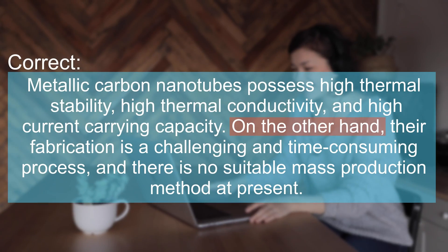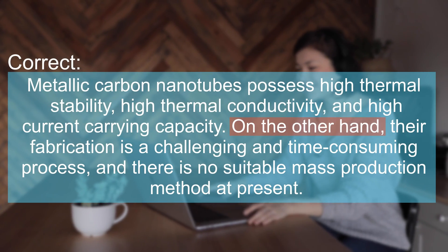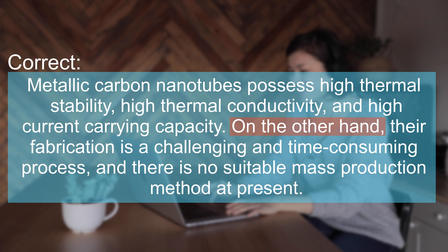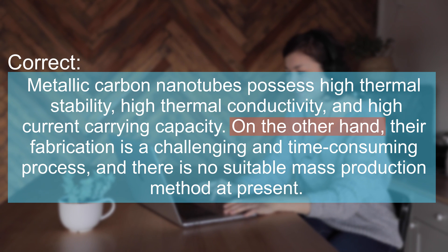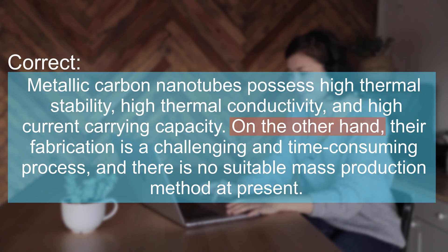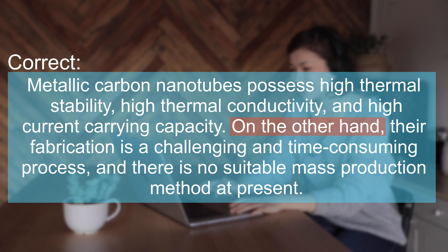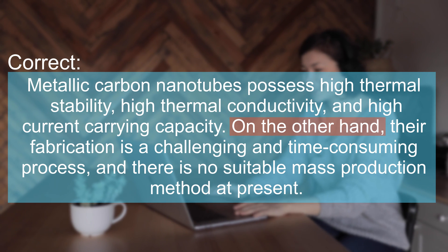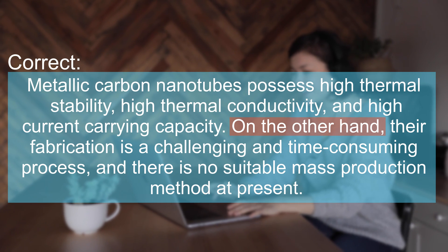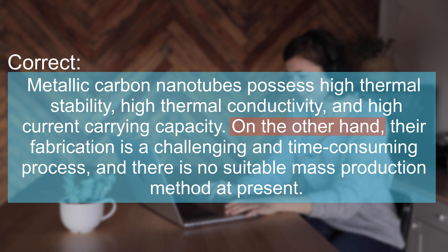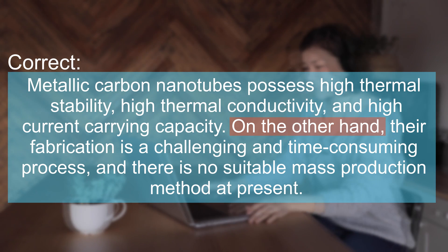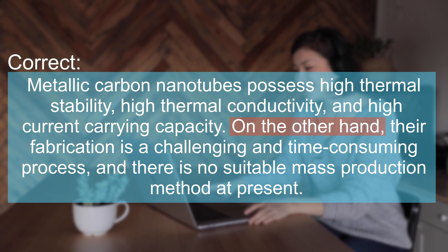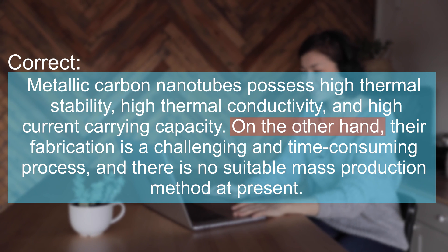That was an easy example. Now let's look at a scientific paper. Here's a correct example: Metallic carbon nanotubes possess high thermal stability, high thermal conductivity, and high current carrying capacity. On the other hand, their fabrication is a challenging and time-consuming process and there is no suitable mass production method at present.